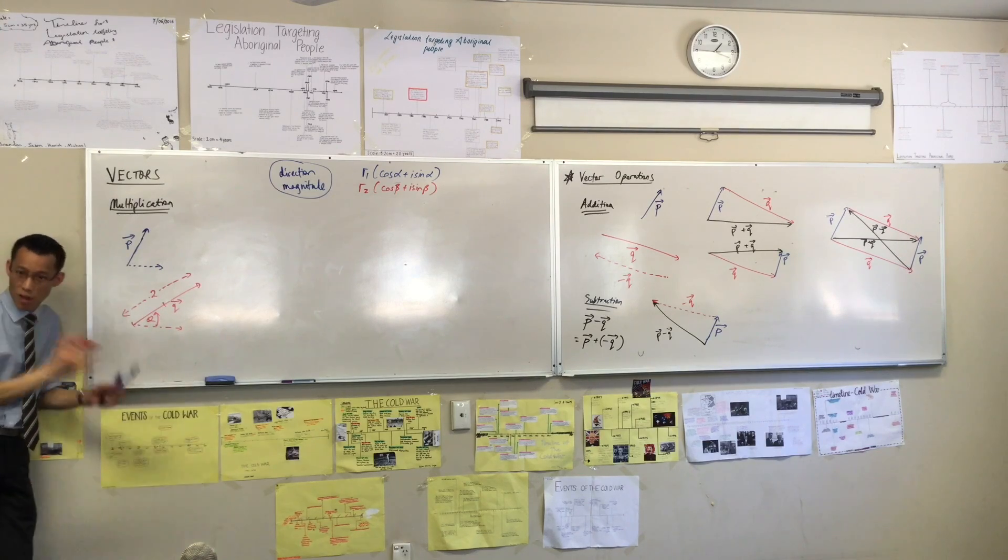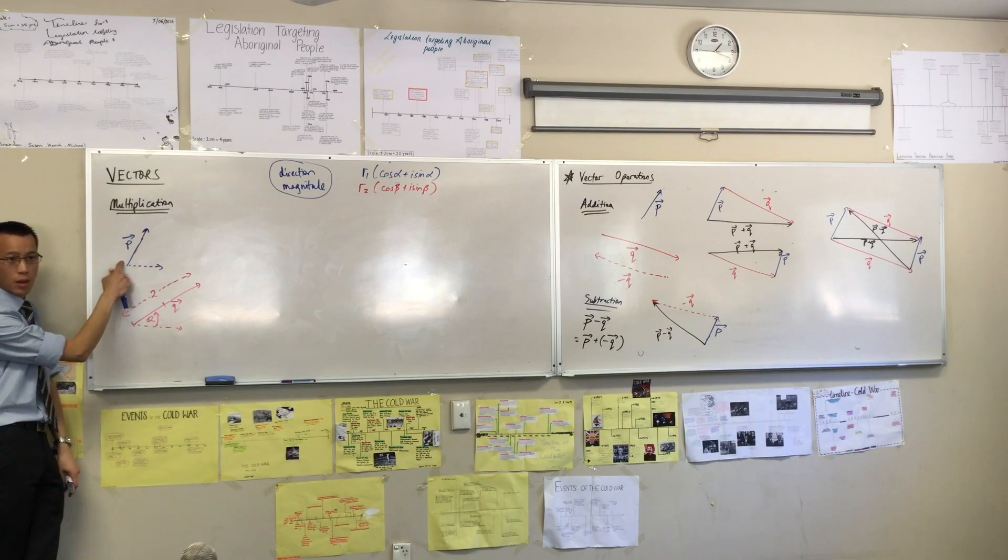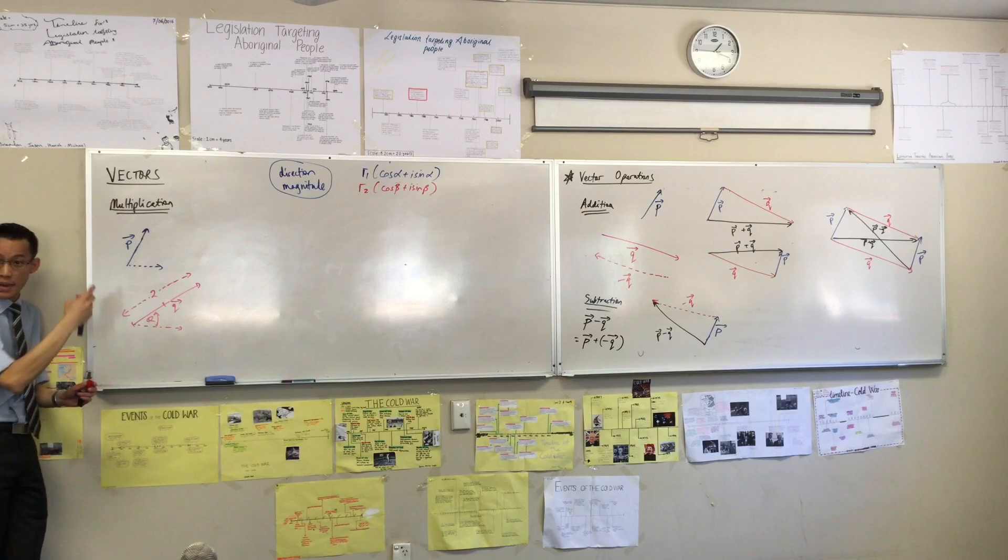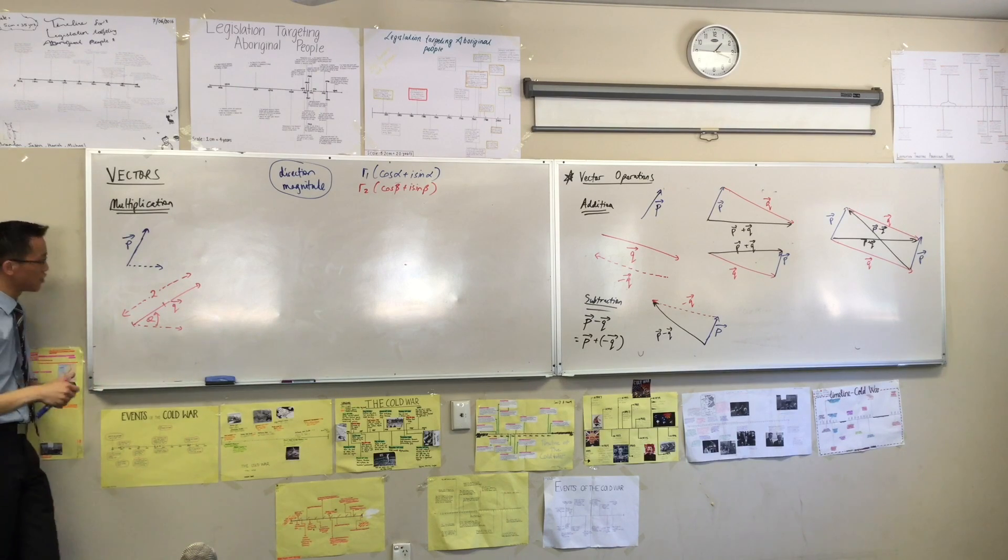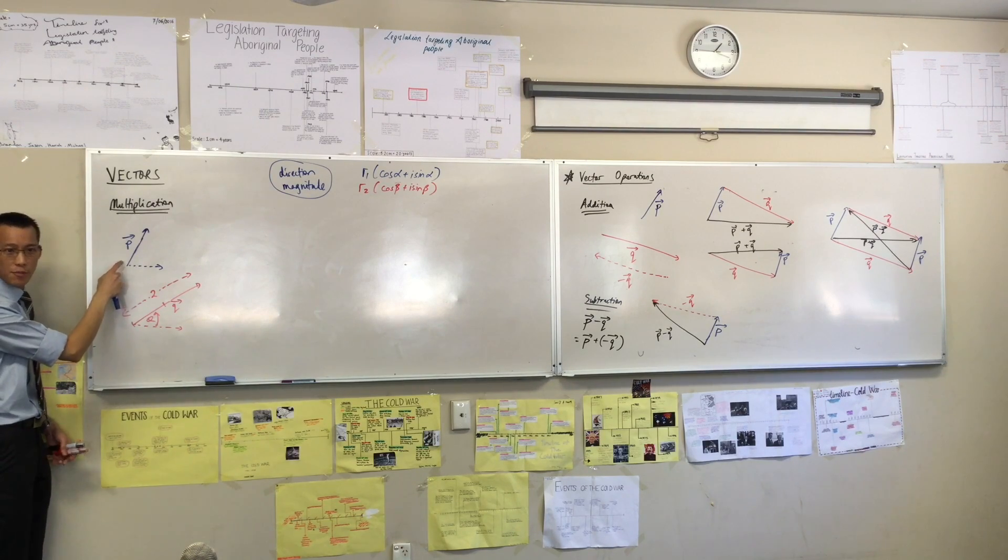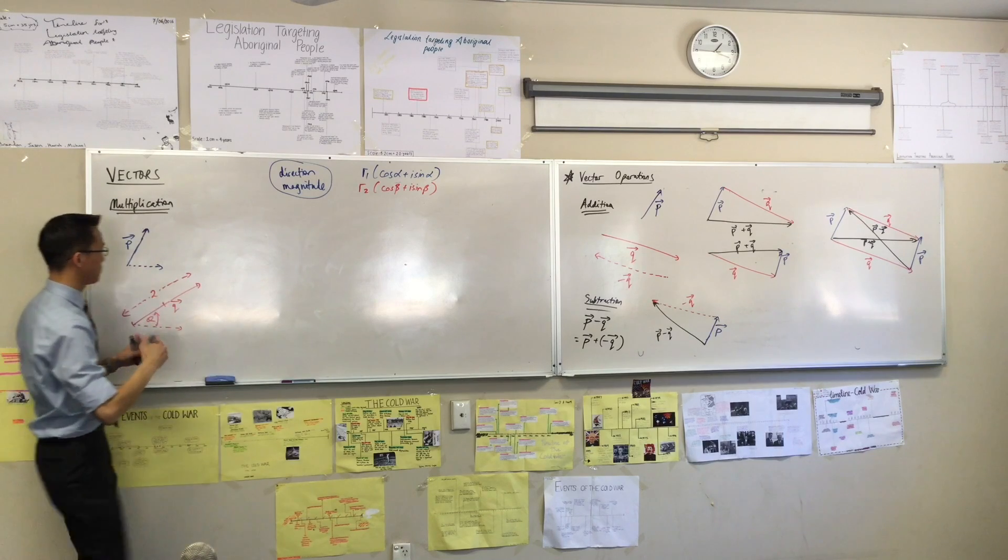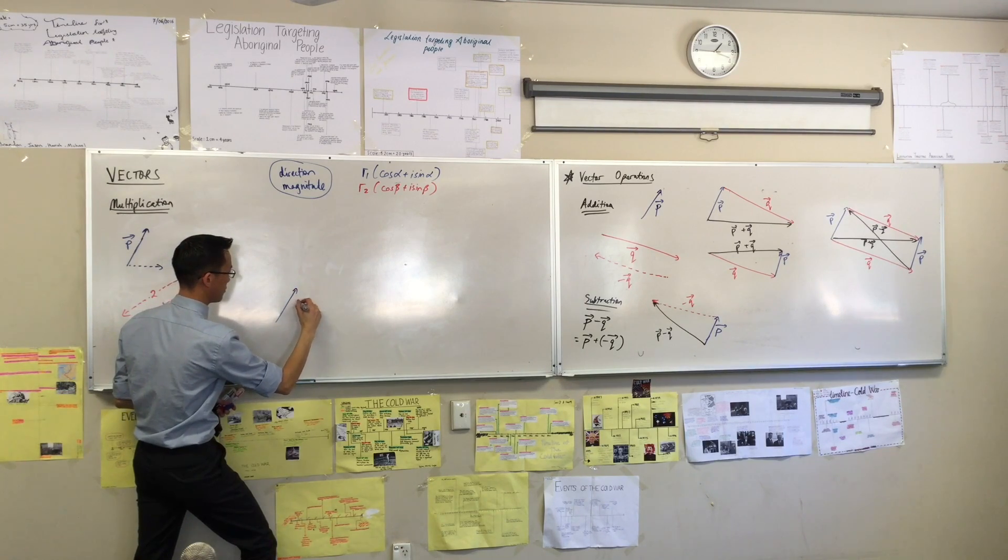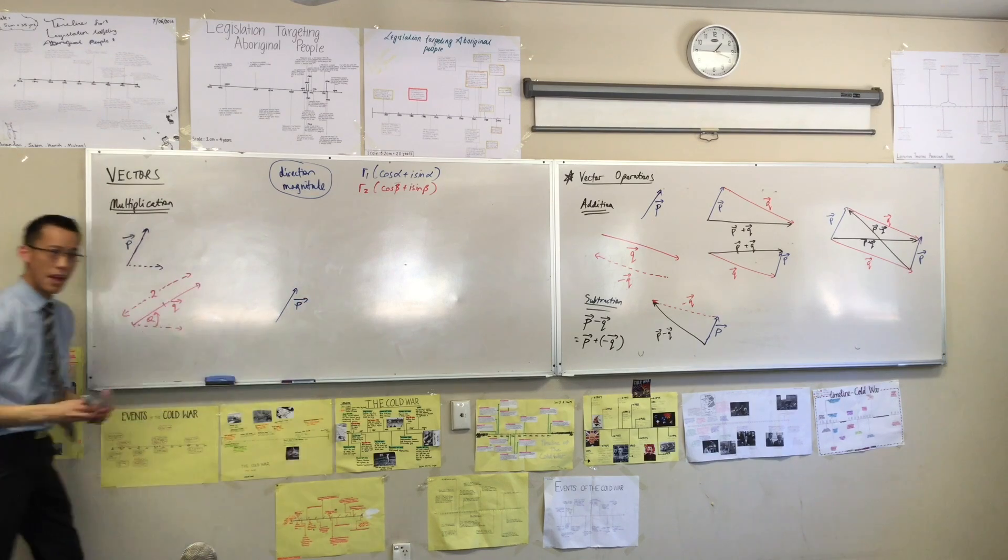So, my new product vector should be twice as long as this one, and should be kind of like this one, but rotated theta radians further. Does that make sense? Okay, so to help us visualize this, draw me another copy of P. Just do another one over here. There's P.